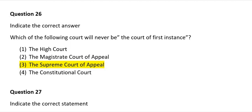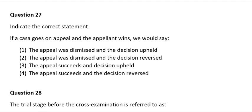Question 27: Indicate the correct statement. If a case goes on appeal and the appellant wins, we would say: 1) The appeal was dismissed and the decision appealed; 2) The appeal was dismissed and the decision reversed; 3) The appeal succeeded and the decision appealed; 4) The appeal succeeded and the decision reversed. The correct answer is number 4: the appeal succeeded and the decision reversed.